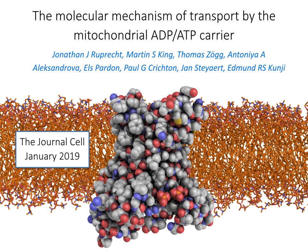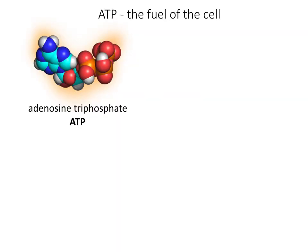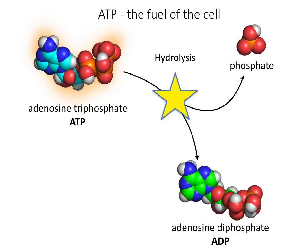The mitochondrial ADP-ATP carriers play a crucial role in eukaryotic cells, but to understand what they do, we first need to explain why ATP is so important. ATP stands for adenosine triphosphate, which is called the fuel of the cell. Hydrolysis of ATP into phosphate and ADP drives many energy-requiring processes in the cell.